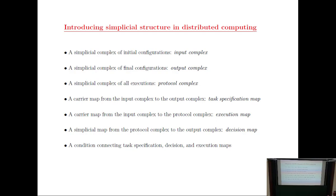When we have a distributed computing question where several processes interact, there is a multitude of simplicial structures you can impose. The first and simplest is the simplicial complex of initial configurations — the so-called input complex. If you have N processes with certain values they can take, you encode any allowed set of initial values as a simplex, giving you a simplicial complex. This is part of what in distributed computing is called task specification.